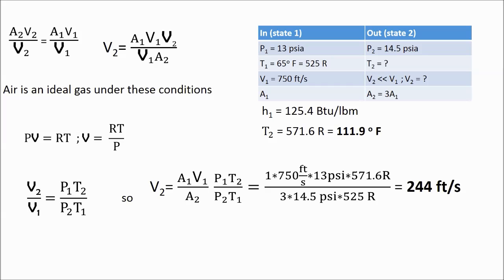You may wonder why we didn't get a velocity of zero, since earlier we assumed that the kinetic energy at the exit was negligible. Notice that assuming that the kinetic energy at the exit is negligible is not the same thing as assuming that the velocity at the exit is zero.